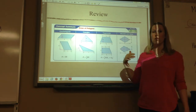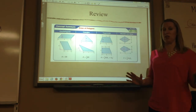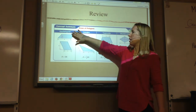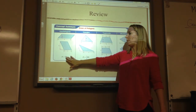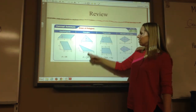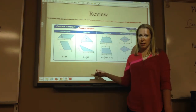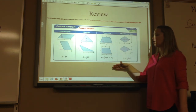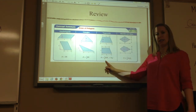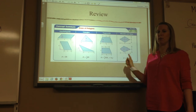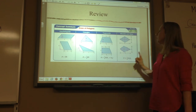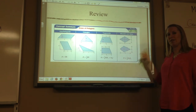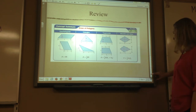So just a review of all the area formulas we've learned so far. A parallelogram is just base times height. A triangle is one-half base times height, or base times height divided by two. Area of trapezoids: half the height times base 1 plus base 2. Area of rhombuses and kites: one-half diagonal 1 times diagonal 2.